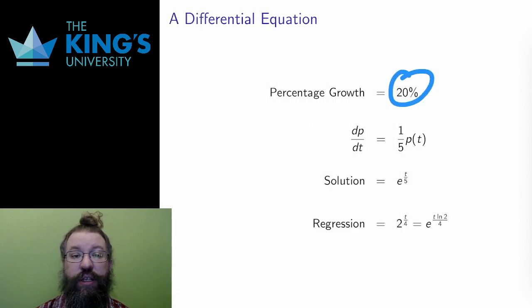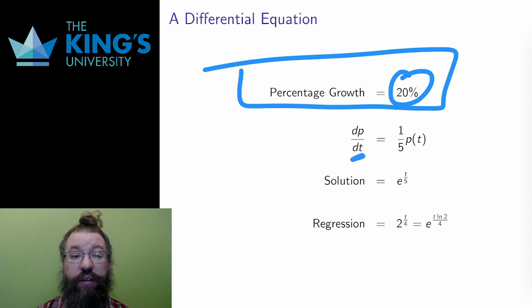As a statement, I can write percentage growth equals 20%. Percentage growth is a growth rate. So I can write the left side as this new idea, as the derivative dp/dt. The right side is 20%. What is 20%? Well, it is 20 over 100 of what we have, and 20 over 100 simplifies to 1 fifth. What we have is the population, so 20% of the population is 1 fifth times p(t).